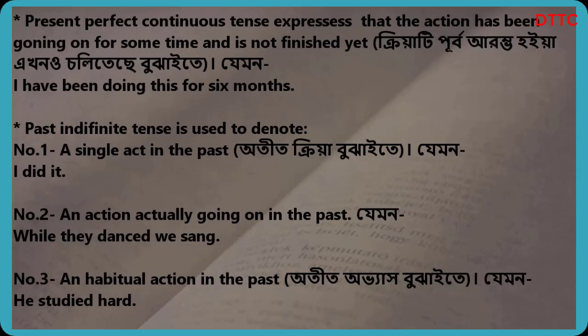Past indefinite tense is used to denote: Number 1 — a single act in the past. For example: I did it. Number 2 — an action actually going on in the past. For example: While they danced and sang. Number 3 — a habitual action in the past. For example: He studied hard.